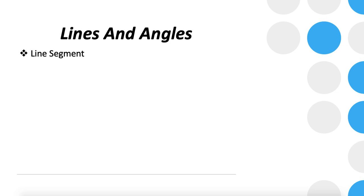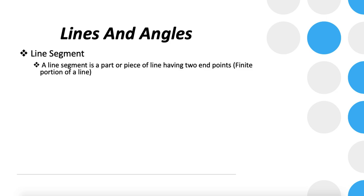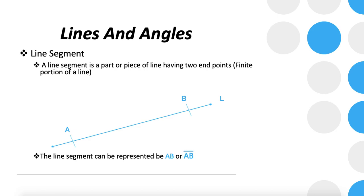The next thing is a line segment. A line segment is a part or piece of a line having two endpoints — a finite portion of a line. For example, if we consider line L and take a finite portion between points A and B, that is a line segment AB. This can be represented as AB or AB with a bar on top. These are two notations for a line segment.